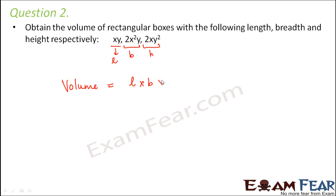It is found out by length into breadth into height, which is equal to xy multiplied by 2x²y multiplied by 2xy². First of all, let us multiply the numeric coefficient. Here the numeric coefficient is 1, here it is 2, and here it is 2, so 1 into 2 into 2 would be 4.